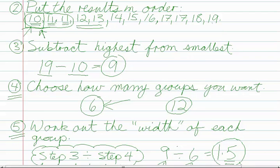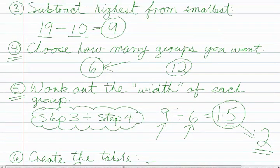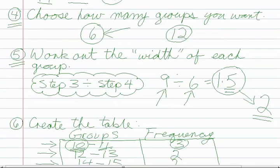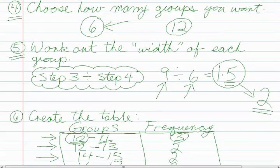In step three we then subtracted, we took nineteen and we subtracted ten, so we took the highest number and subtracted the smallest number and that left us with nine.